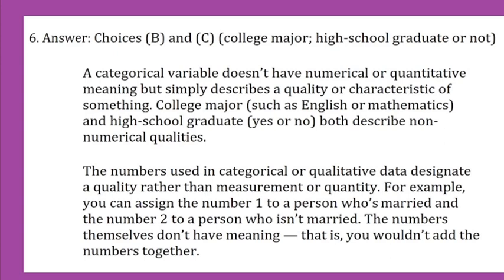College major, such as English or mathematics, and high school graduate—yes or no—both describe non-numerical qualities. The numbers used in categorical or qualitative data designate a quality rather than measurement or quantity. For example, you can assign the number 1 to a person who is married and the number 2 to a person who isn't married. The numbers themselves don't have meaning—that is, you wouldn't add the numbers together.